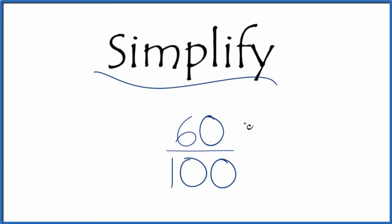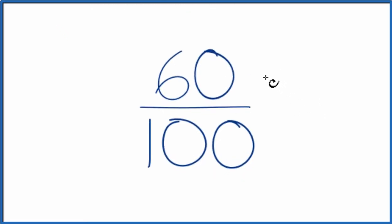Here's how you simplify the fraction 60 over 100. What we want to do is find another fraction that's equivalent, has the same value as 60 over 100, but that we've simplified it to lowest terms.